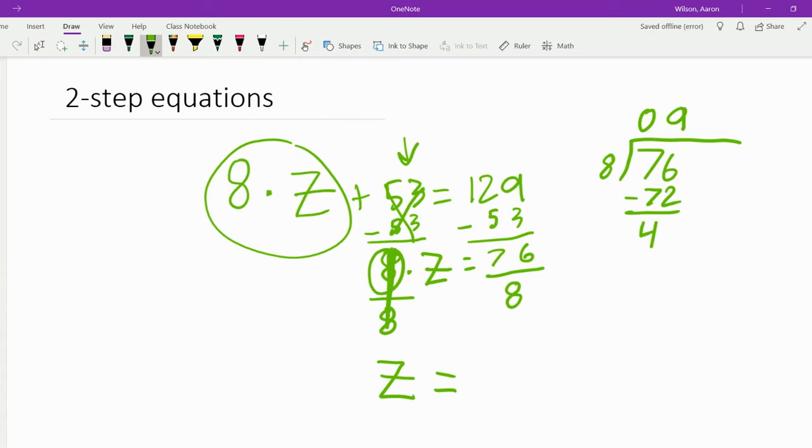We're going to do this in the decimal way, so since 8 doesn't go into 4, we need to put a decimal point here and 0. Now we're going to bring the 0 down. We have 40, and we also need to bring the decimal point up right here. So now 8 goes into 40 5 times.